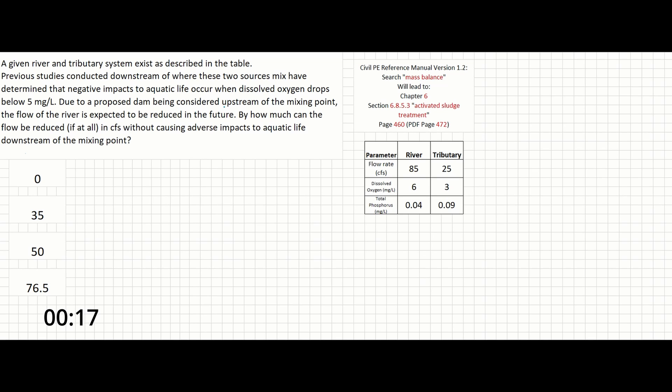Due to a proposed dam being considered upstream of the mixing point, the flow of the river is expected to be reduced in the future. By how much can the flow be reduced, if at all, in CFS without causing adverse impacts to aquatic life downstream of the mixing point?